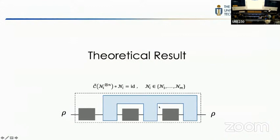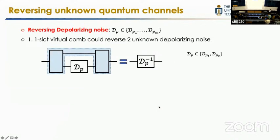For the problem of reversing all channels in this set based on a virtual comb, let's see some theoretical results. The first situation we consider is reversing depolarizing noise where the noise level is unknown. We only know that it is from a given set with elements p1, p2, to pn. For the case where the set has finite elements: if there are two possible candidates p1 and p2, then we can always find a one-slot virtual comb that can reverse both depolarizing noises by querying it just one time.